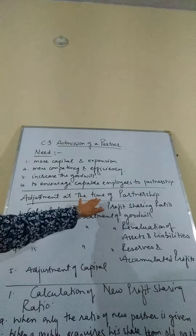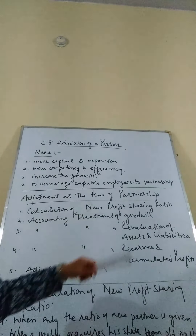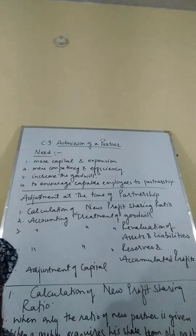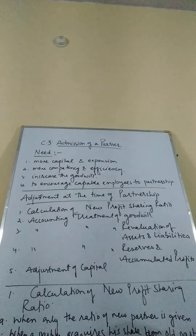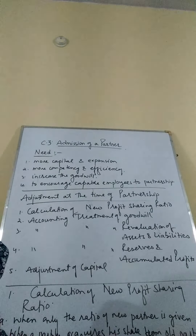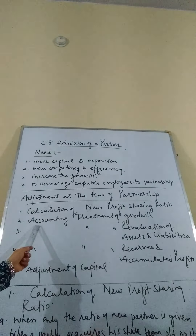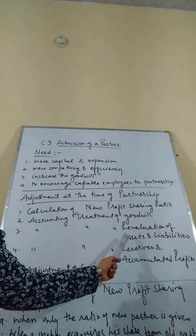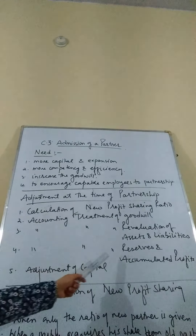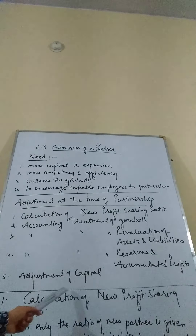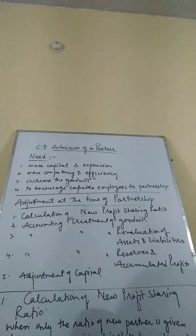So what are the adjustments which are required at the time of admission? There are certain adjustments at the time of admission, as it is a kind of reconstitution that we have already done in the previous chapter. In any type of reconstitution, we have to do all these adjustments. The first adjustment is the calculation of new profit sharing ratio, followed by the sacrificing ratio or gaining ratio. The second is accounting treatment of goodwill. The third is accounting treatment of revaluation of assets and liabilities. The fourth is accounting treatment for reserves and accumulated profits, and the fifth is capital adjustment.